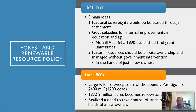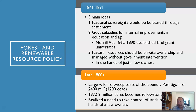So why would things change? In the late 1800s, a large wildfire swept parts of the country called the Peshtigo Fire, starting in the Great Lakes area in Wisconsin. It was 2,400 square miles, and 1,200 people died in this wildfire.